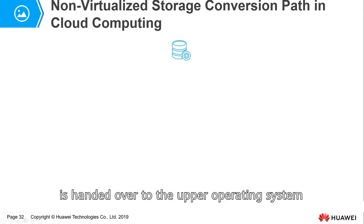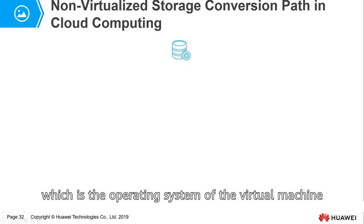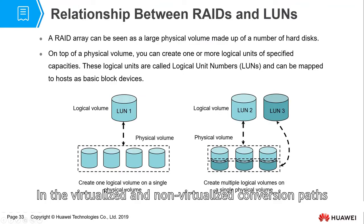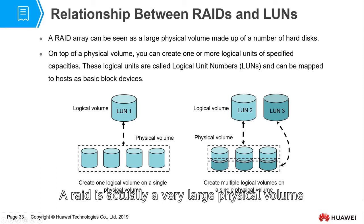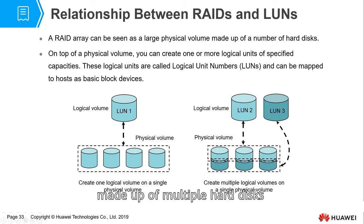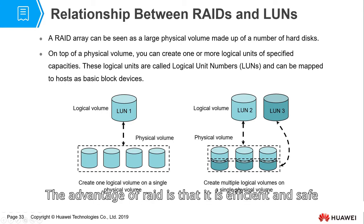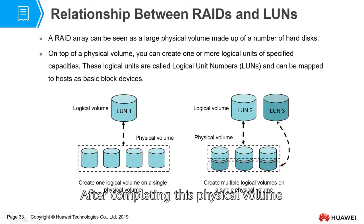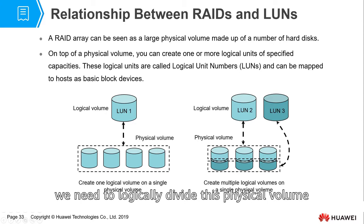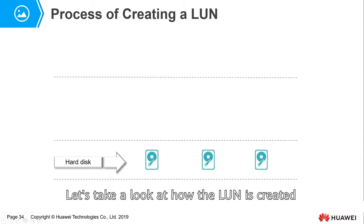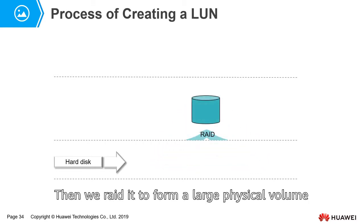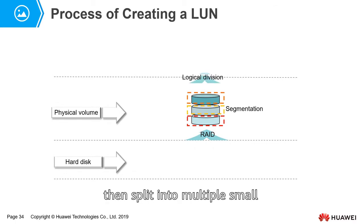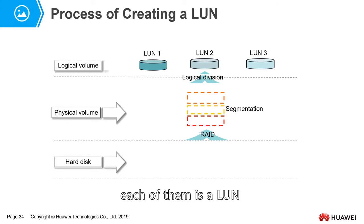In the virtualized and non-virtualized conversion paths, we have mentioned RAID and logical partitioning many times. RAID is a very large physical volume made up of multiple hard disks. The advantage of RAID is that it's efficient and safe. After completing this physical volume, we cannot directly map it to the host, so we need to logically divide it. Let's look at how a LUN is created: the bottom layer has many physical hard disks, we RAID them to form a large physical volume, and that physical volume is split into multiple small logical units — each of them is a LUN.